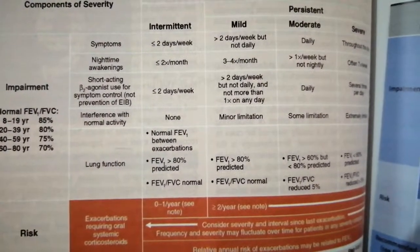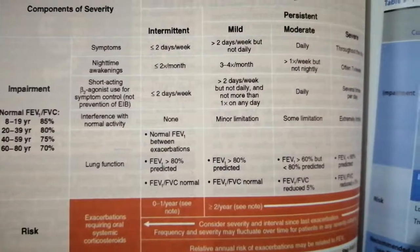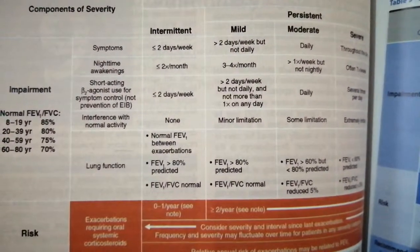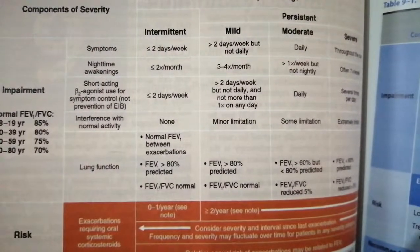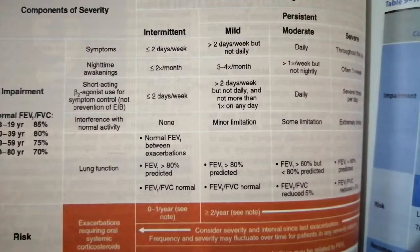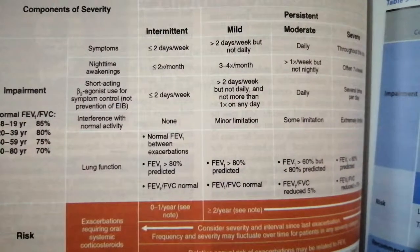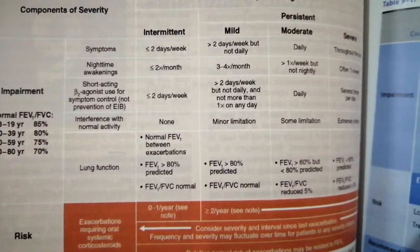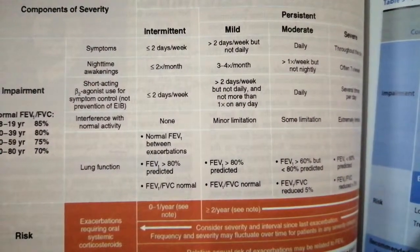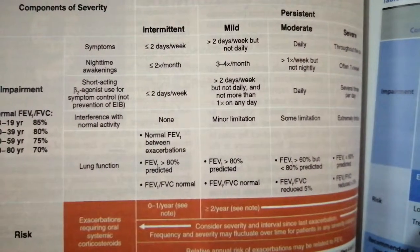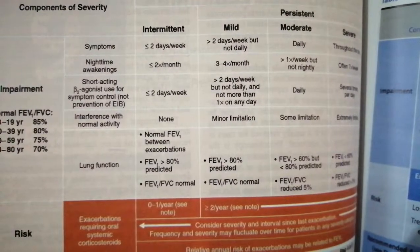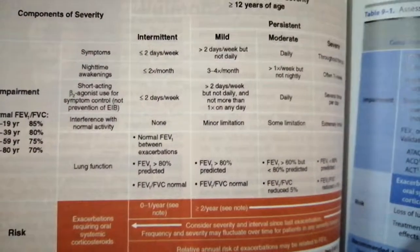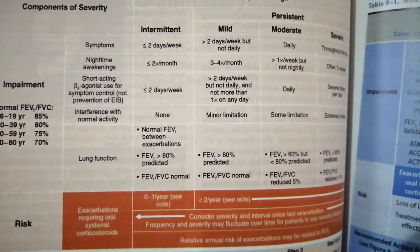As you can see, we have classified asthma into intermittent, mild, moderate, and severe. In intermittent asthma, symptoms are less than two days per week, nighttime awakening is less than two per month, beta-agonist use is less than two days per week, there is no interference with normal activity, lung functions are normal, and there is no systemic steroid use. In this step you just prescribe short-acting beta-agonists.